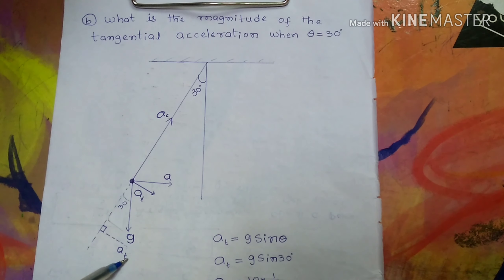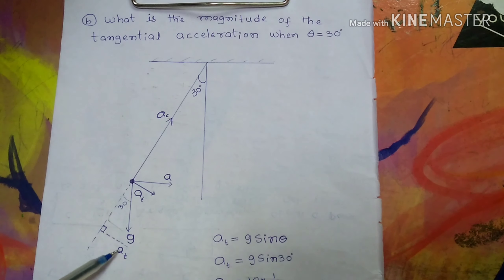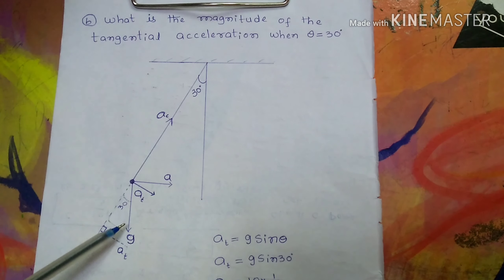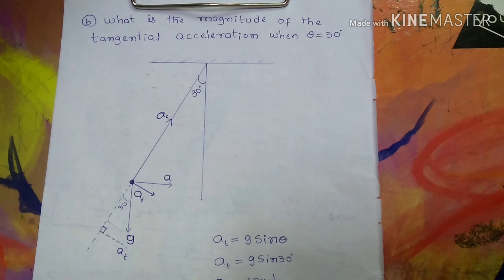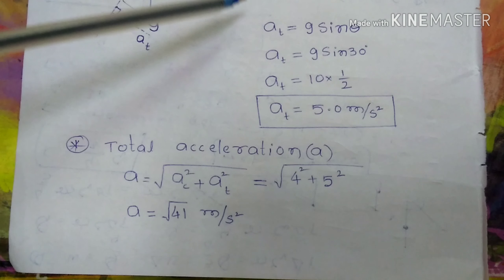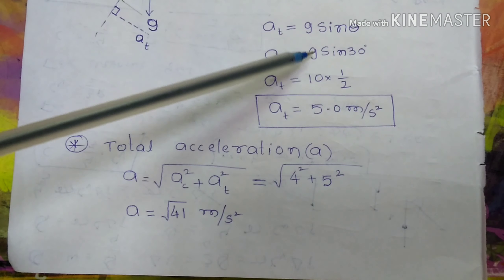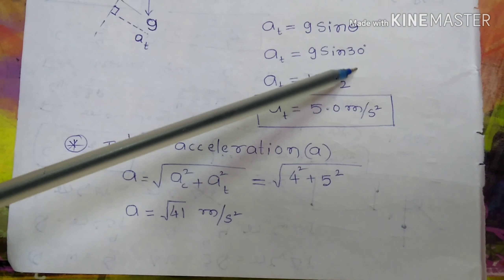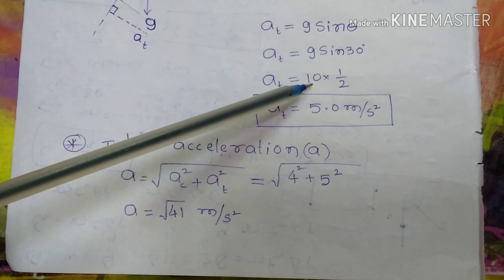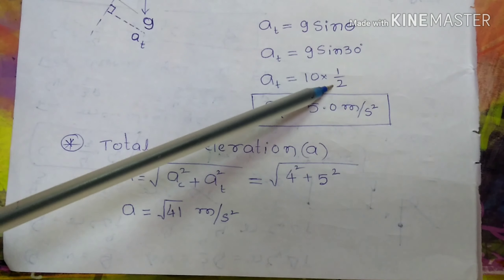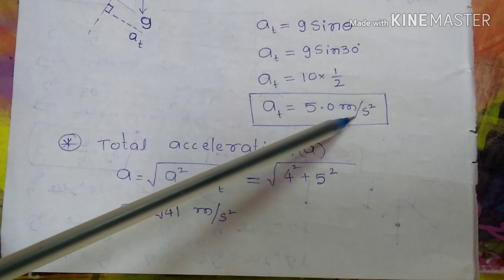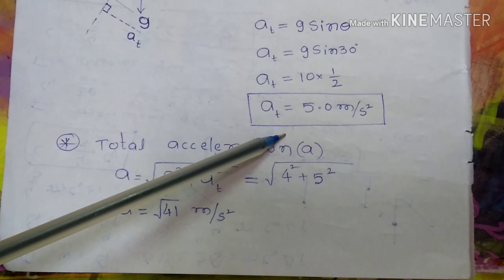Gravity g downward has two components: one along the centripetal direction and one along the tangential direction, which is At. At equals g sin theta, where theta is 30 degrees. So At equals g sin 30 — g is 10 meters per second squared, and sin 30 is one-half — therefore At equals 5 meters per second squared. This is the tangential acceleration.